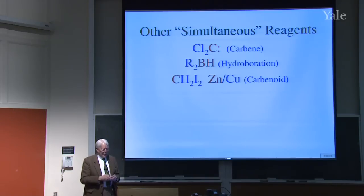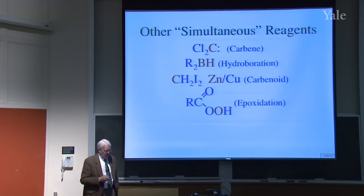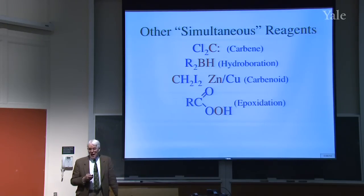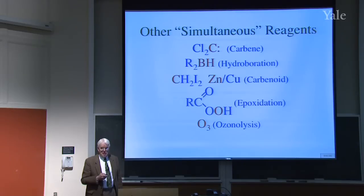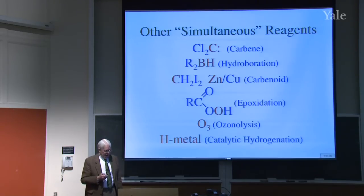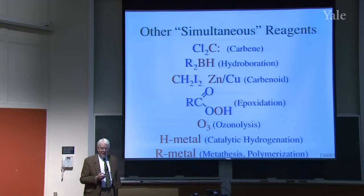Now we're going to go on to a different kind of way of making a cyclopropane with what's called the Simmons-Smith reagent. Then into epoxidation—adding just an oxygen to a double bond to give a three-membered oxirane ring. And then ozonolysis, which is a more dramatic kind of cycloaddition to give a ring. We probably won't get today to catalytic hydrogenation, polymerization, and metathesis where metals are involved.